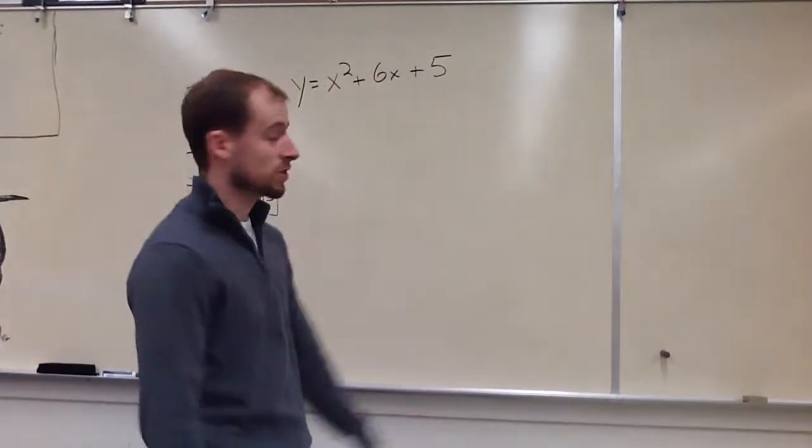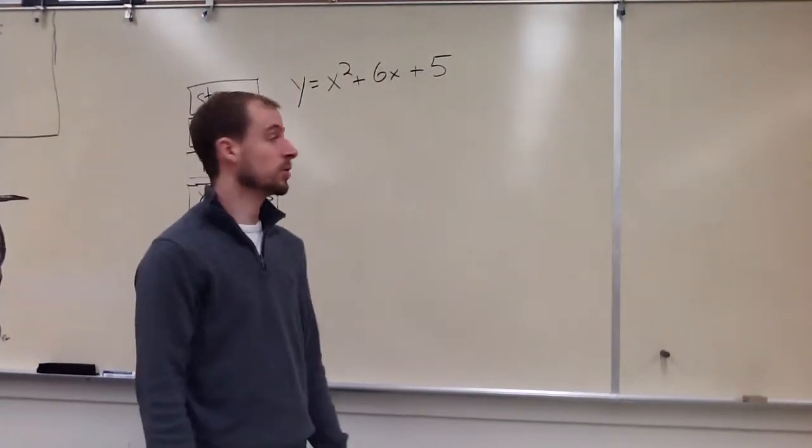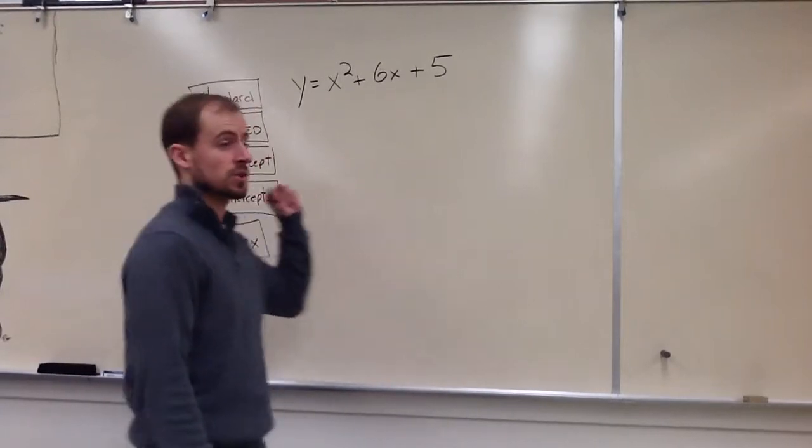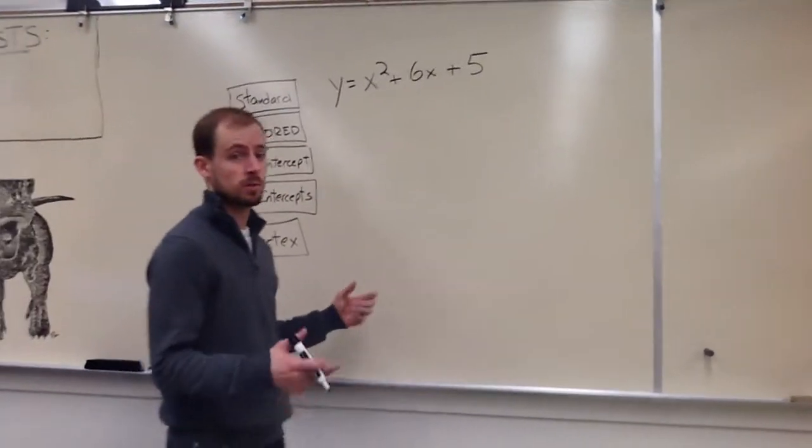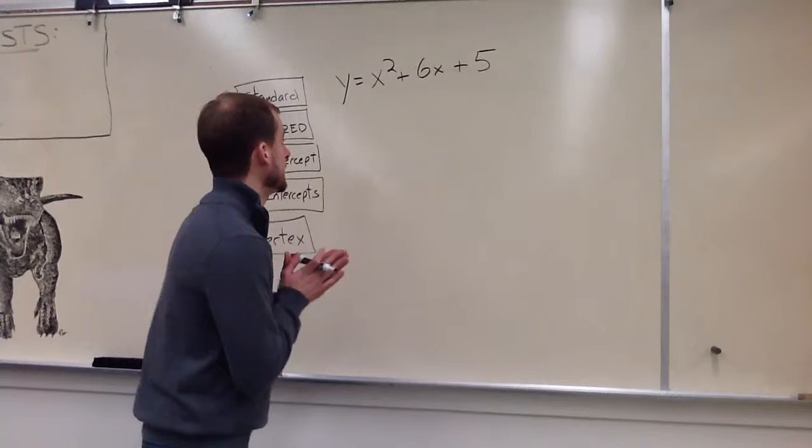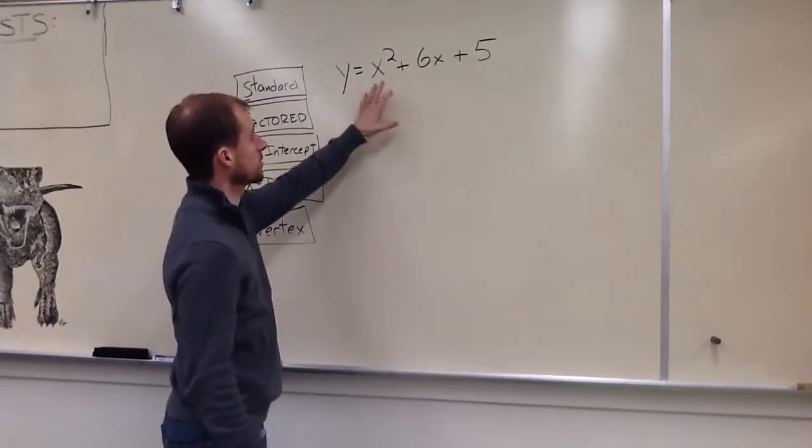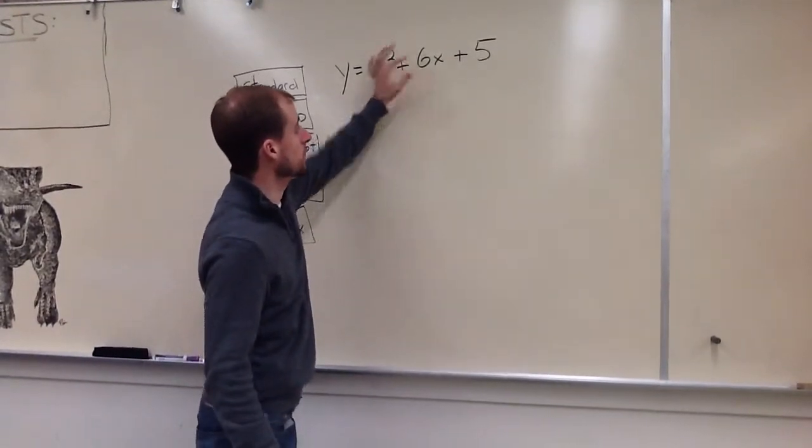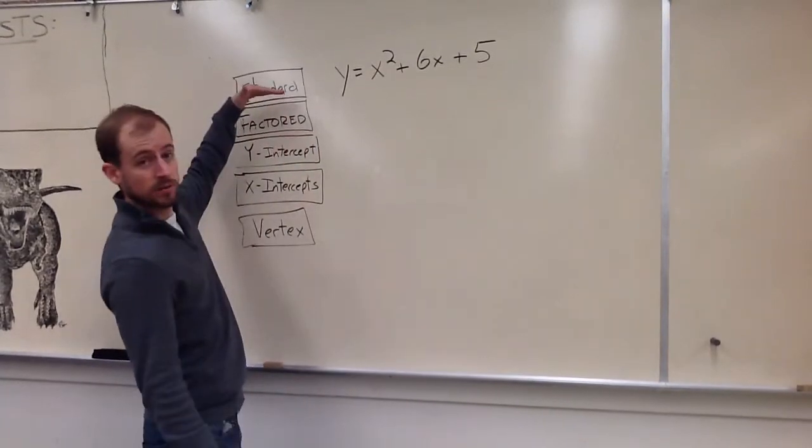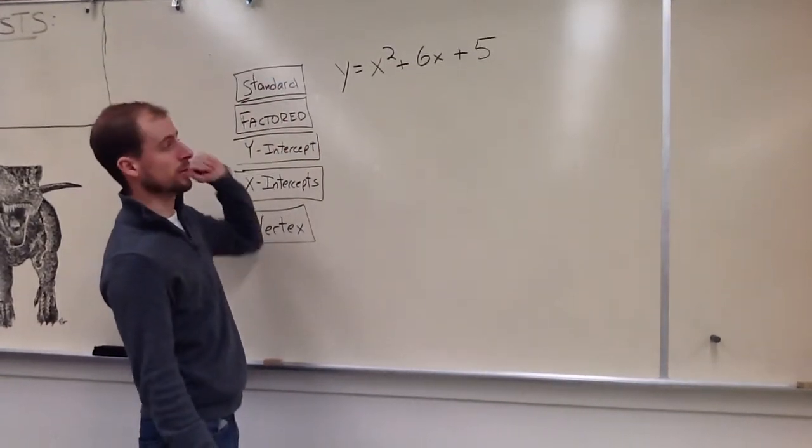All right, I'm going to show you how to take your quadratic and switch it into a couple different forms and tell a little bit of information about it. So we've got y equals x squared plus 6x plus 5, and I have it in standard form, I need it in factored form.